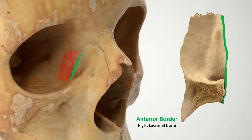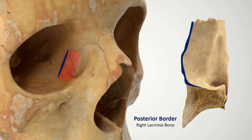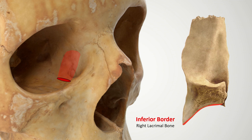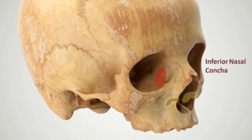The anterior border articulates with the frontal process of the maxilla. The posterior border articulates with the orbital lamina of the ethmoid bone — this is an especially important component of the medial wall of the orbit. The superior border on the top side articulates with the frontal bone. The inferior border is separated into two parts: the posterior part articulates with the orbital plate of the maxilla, and on the anterior part this border houses a descending process. Here the lacrimal bone articulates with the lacrimal process of the inferior nasal concha, and together these two bones enclose the bony canal for the nasolacrimal duct, also called the tear duct.